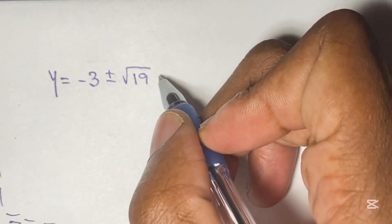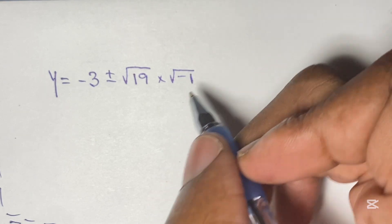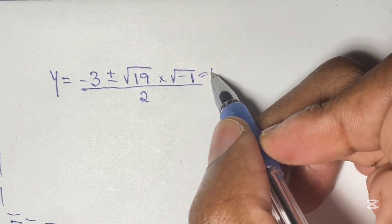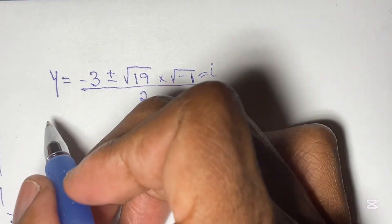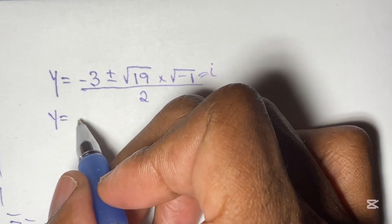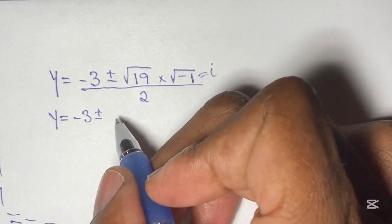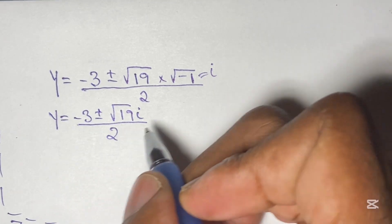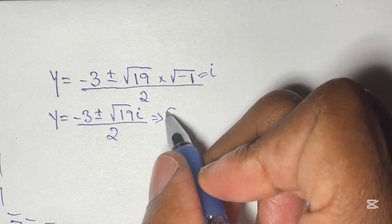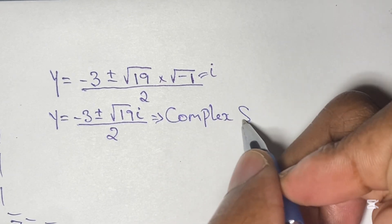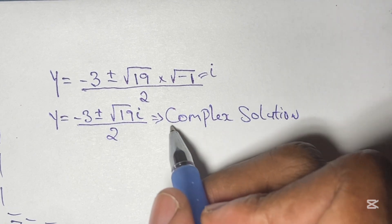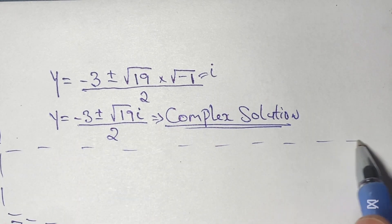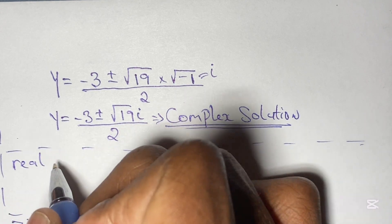We can write the square root of negative 19 as the square root of 19 times the square root of negative 1. Since the square root of negative 1 is the imaginary number i, our equation becomes y equals negative 3 plus or minus root 19 times i, all over 2. This is a complex solution with no real value, so we discard it. Our real solution is y equals 2.